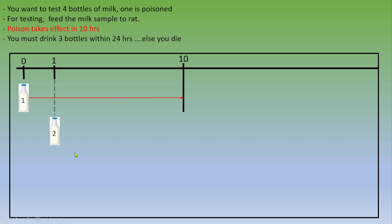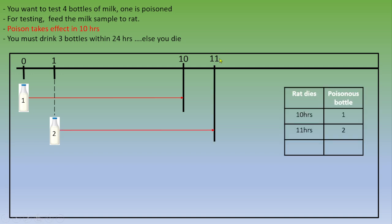Like this, you feed the rat and 10 hours later, at hour 11, you've got two options: the rat will die after hour 11 and the poison is on bottle two, or the rat is still alive.